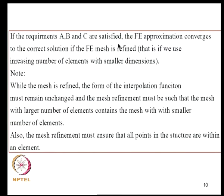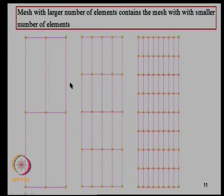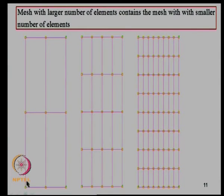If requirements A, B, and C are satisfied, the FE approximation converges to the correct solution as the mesh is refined. When refining the mesh, the form of interpolation functions must remain unchanged, and the mesh with larger number of elements must contain the mesh with smaller number of elements. For example, a 2×2 mesh must be a subset of subsequent refinements — a 3×3 mesh would not satisfy this, so convergence cannot be claimed in that case.